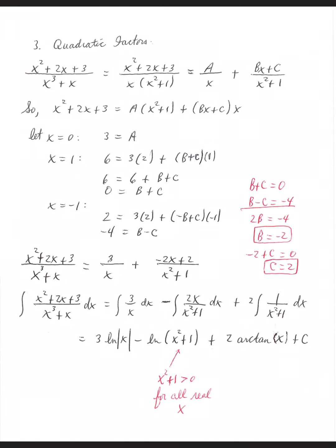A third type is when you have quadratic factors. So far we've had distinct linear and repeated linear. Now we have a quadratic factor. Start by factoring the denominator as much as possible — factor out an x, leaving x squared plus 1. A sum of squares can't be factored with real numbers, which is why this is a quadratic factor.